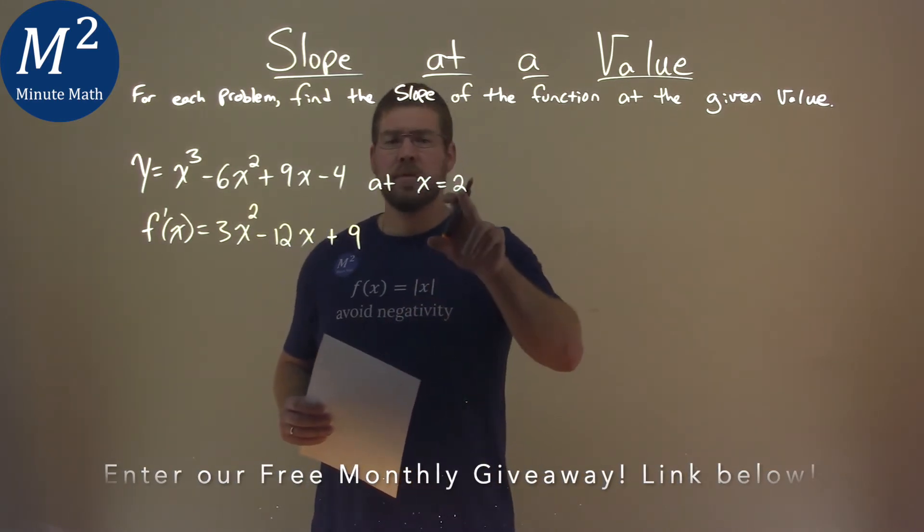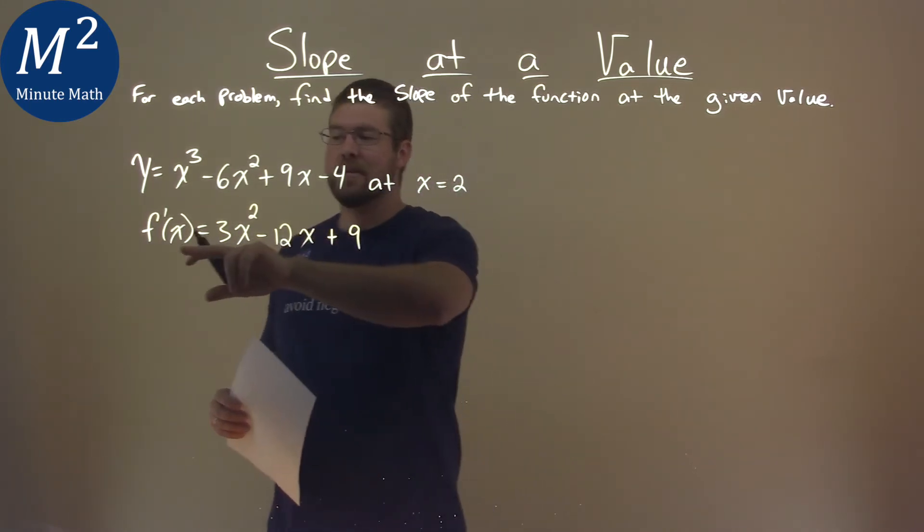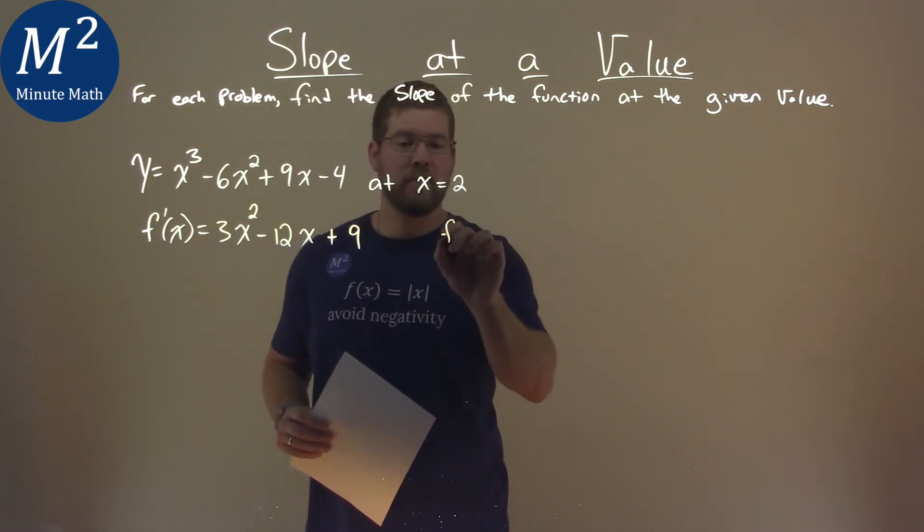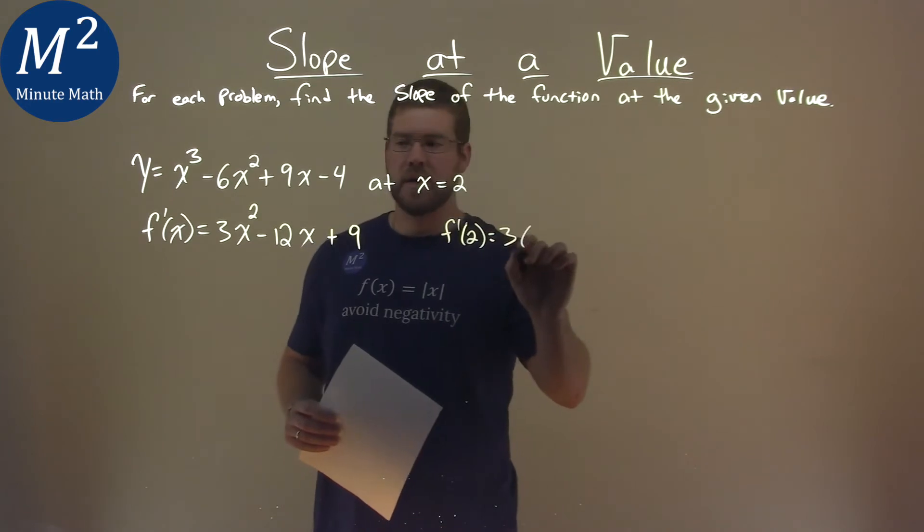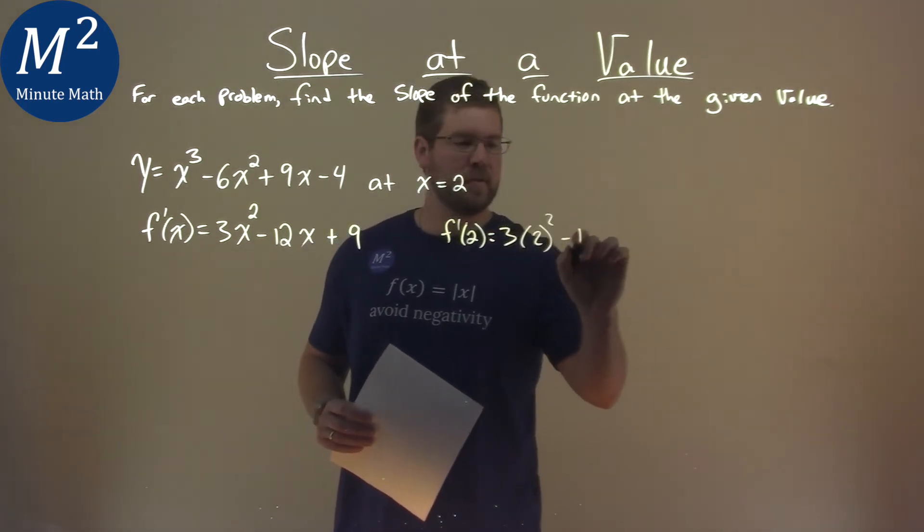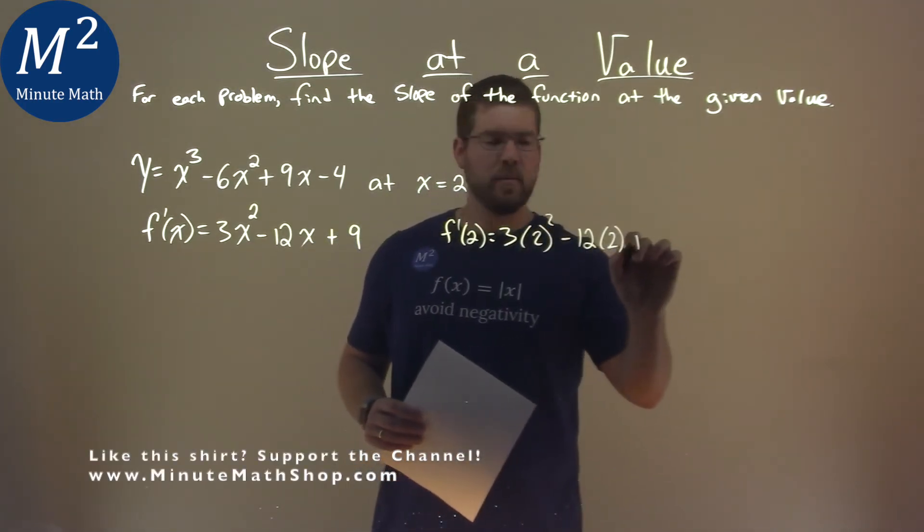Now with that, we need to plug x equals 2 in for our x value of the derivative. So f prime of 2 is equal to 3 times 2 squared minus 12 times 2 plus 9.